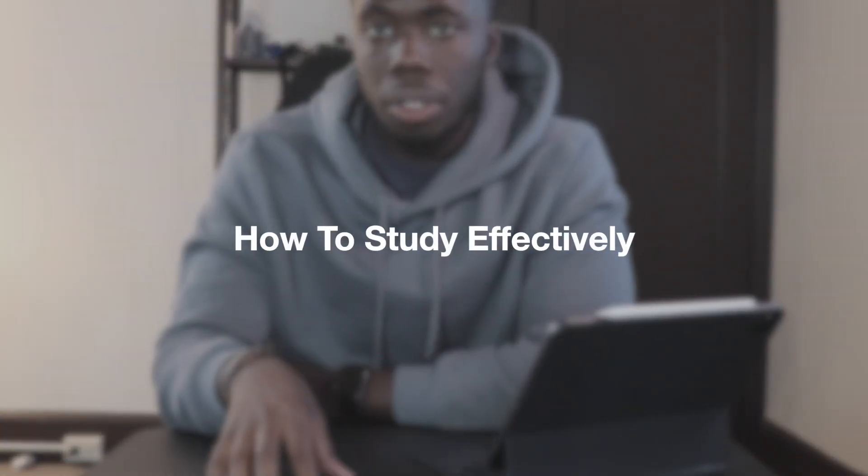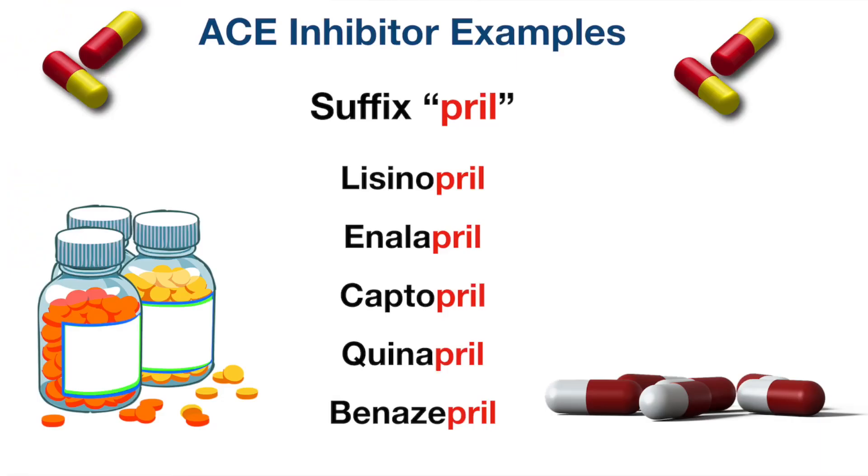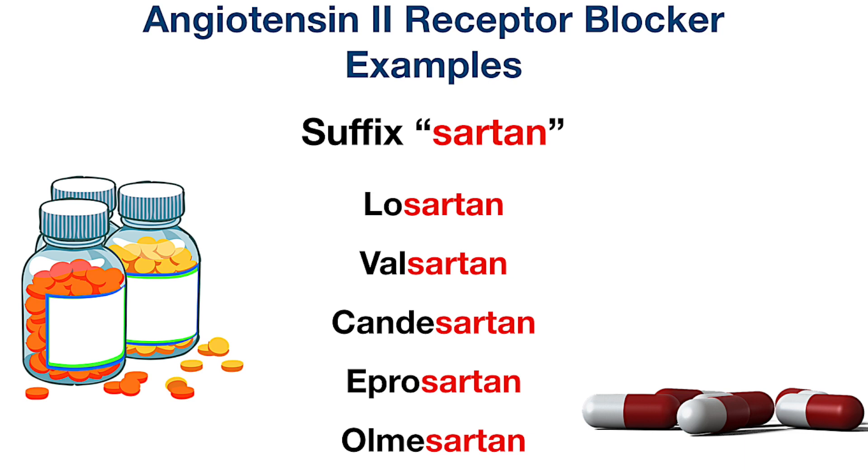The first thing you want to do when studying is to study based on the specific drug class. For example, with hypertension you can study ACE inhibitors (angiotensin converting enzyme inhibitors) versus ARBs (angiotensin receptor blockers). This makes it much easier to study based on mechanism of action. Most drugs in a class share the same suffix or prefix — ACE inhibitors all end in -pril, while ARBs all end in -artan.